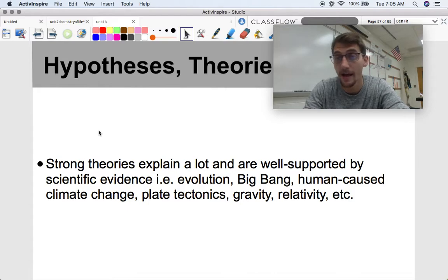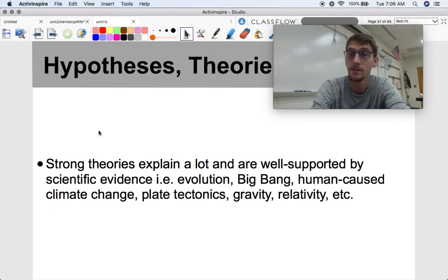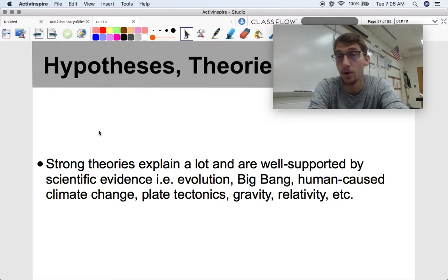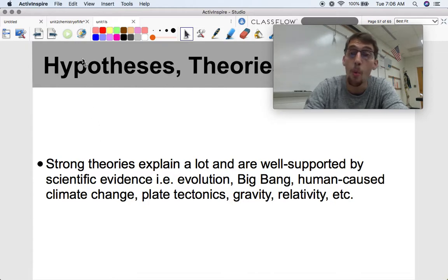Strong theories explain a lot, and they're well-supported by scientific evidence. The more a theory can explain, the stronger it is. Some examples of strong theories are evolution, Big Bang, human-caused climate change, plate tectonics, gravity, relativity, etc. Those are all theories. Those are all explanations for why the natural world is the way it is, why we see these observations in the universe as the way they are. Those are all very strong theories, well-supported, and they're really good explanations.